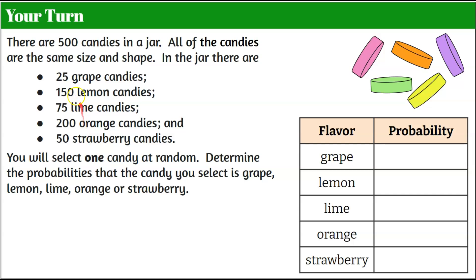Now it's your turn. There's a jar with 500 candies in the jar. All of the candies are the same size and shape meaning when you reach in they're all going to feel the same. In the jar there are 25 grape candies, 150 lemon candies, 75 lime candies, 200 orange candies, and 50 strawberry candies. You will select one candy at random. You need to determine the probabilities that the candy you select is grape, lemon, lime, orange, or strawberry. So you're going to pause the video, complete this probability model, and then come back to see my work. Good luck!